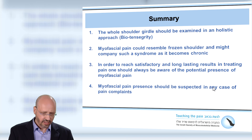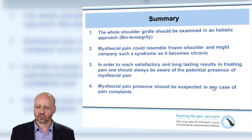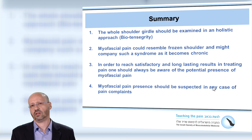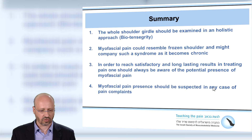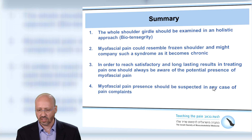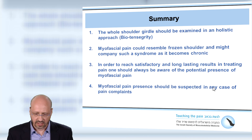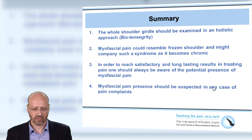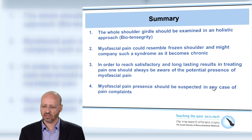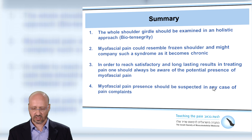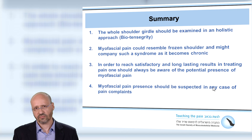To summarize: the whole shoulder girdle should be examined in a holistic, biotensegrity approach. Myofascial pain can resemble frozen shoulder and might accompany such a syndrome as it becomes chronic. In order to reach satisfactory and long-lasting results in treating pain, one should always be aware of the potential presence of myofascial pain, and myofascial pain should always be suspected in any case of pain complaints, no matter what their origin is. Thank you.